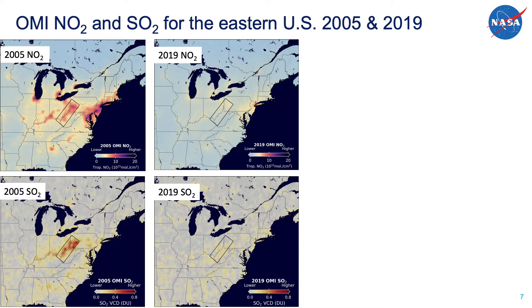This is a result of the Clean Air Act. Catalytic converters in cars really do work, resulting in less NO2, and the pollution scrubbers on coal power plants do a good job of preventing NO2 and SO2 from being emitted to the atmosphere.